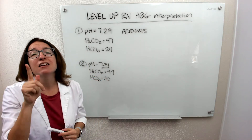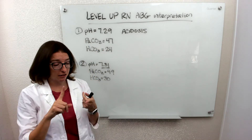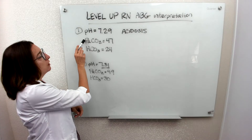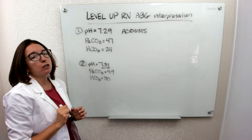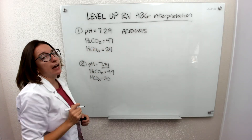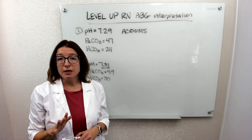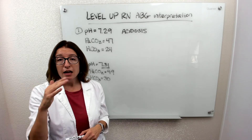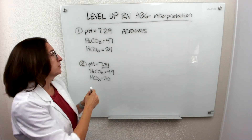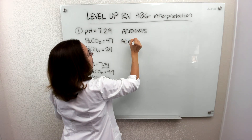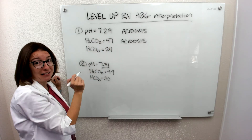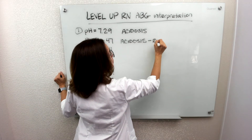Step two: we need to figure out who's to blame for that acidosis — is it the respiratory system or is it the metabolic system? For the respiratory system we look at PaCO2, and for the metabolic system we look at HCO3. PaCO2 is 47; the normal range is between 35 and 45. Being out of range on the high side means we have acidosis, so the respiratory system is to blame. We have respiratory acidosis.